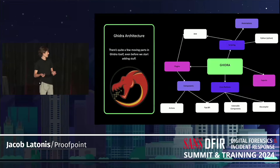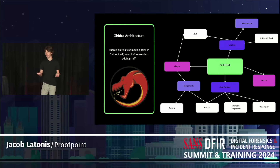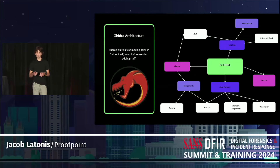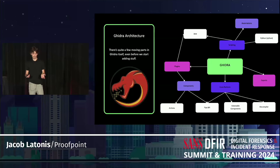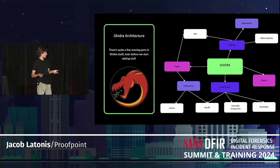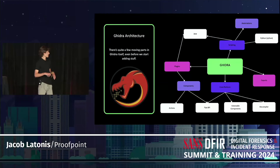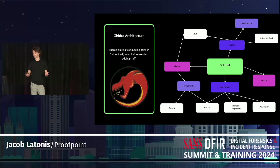Getting started, the first thing I wanted to break down is the Ghidra architecture — not all-encompassing, but the parts we need to know. Starting with the core platform: first is the flat API. The developers wrote a flat API abstraction that gives you access to all of the things they thought were cool and important. There are also extensible components, and then the decompiler and disassembler. If you use Ghidra, you interact with those through the GUI, scripting, and everything like that.